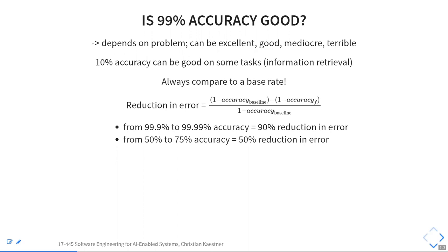For example, if Google gives you the right search result in the first hit 10% of the time, you might be happy with that — some tasks are just hard and you're willing to look at multiple results. To interpret accuracy, you can look at improvement: what's the accuracy of the previous best approach and how much better can I do? If I'm telling you your model does 20% better than the old model, that's easier to interpret — though still not clear if it's in a useful range.